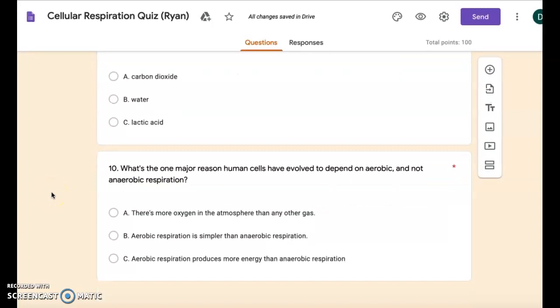And number ten: What's the one major reason human cells have evolved to depend on aerobic and not anaerobic respiration? A: there's more oxygen in the atmosphere than any other gas. B: aerobic respiration is simpler than anaerobic respiration. Or C: aerobic respiration produces more energy than anaerobic respiration.